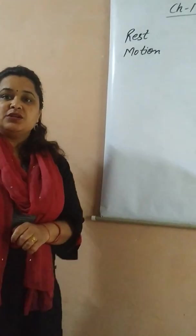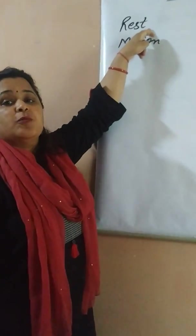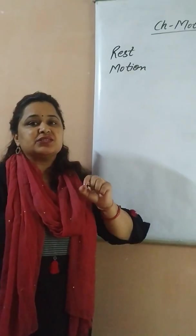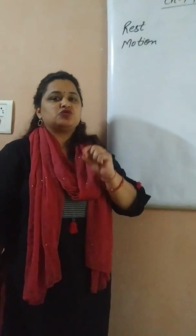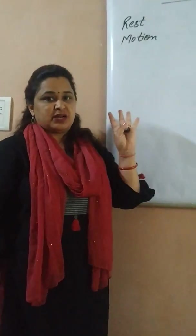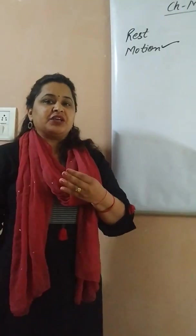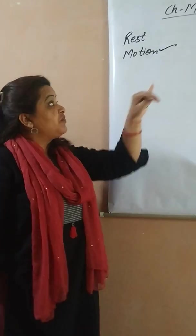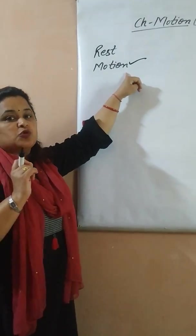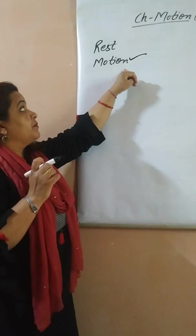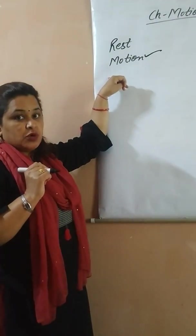Rest and motion. A body or an object is said to be at rest if it does not change its position with respect to time and surroundings. An object or a body is said to be in motion if it changes its position with respect to time and surroundings.